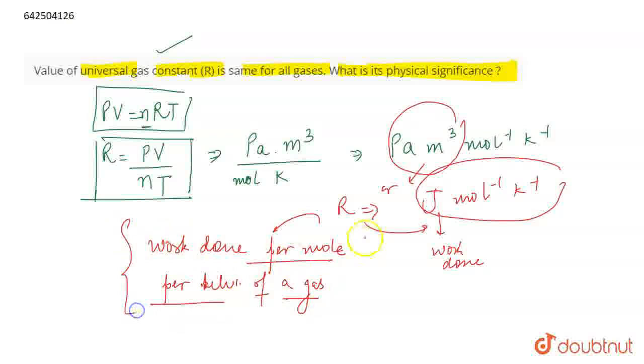So this is the physical significance of the universal gas constant, which has a value equal to 8.314 joule per mole per Kelvin. That's all for the question.